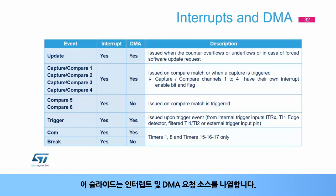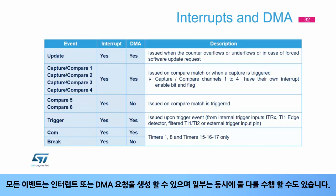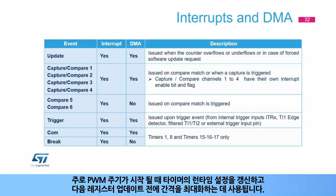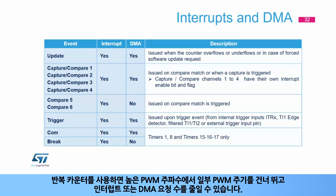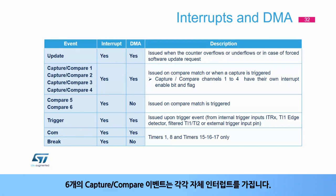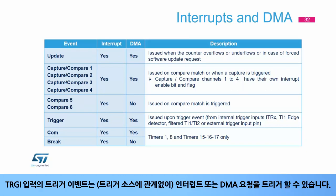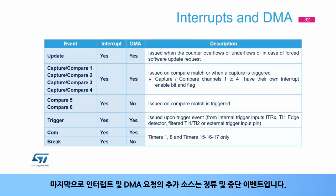All events are able to generate either an interrupt or a DMA request, and some can do both simultaneously. The update event is issued when the counter overflows or underflows, mainly used to refresh the timer's runtime settings at the beginning of the PWM period. The repetition counter allows skipping some PWM periods and decreasing the number of interrupts or DMA requests at high PWM frequency. Each of the six capture compare events has their own interrupt; only channels 1 to 4 can trigger a DMA transfer. A trigger event on the TRGI input can also trigger an interrupt or DMA request. Additional sources include commutation and break events.